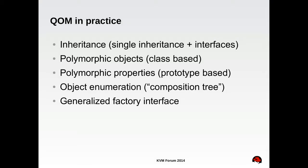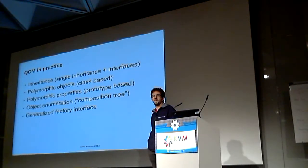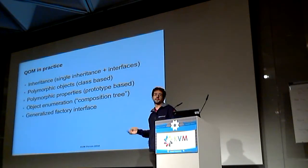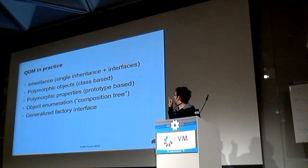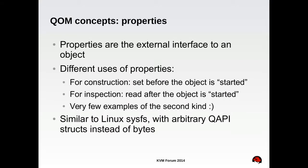In practice, QM provides these five things: class inheritance with objects that are polymorphic, and also polymorphic properties within objects. Class inheritance exists for methods and implementation, but the external interface with properties is actually instance-based — more akin to prototypes as you find in JavaScript or similar languages. Also, an important part of QM is the composition tree. And QM also provides a very useful generalized factory interface. Everything is based on properties as far as the external interface goes.